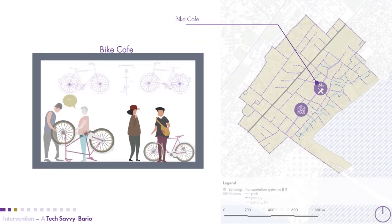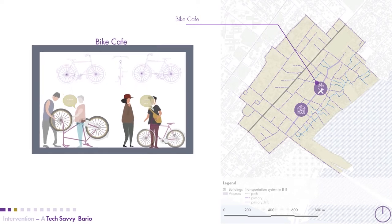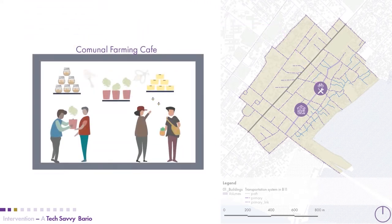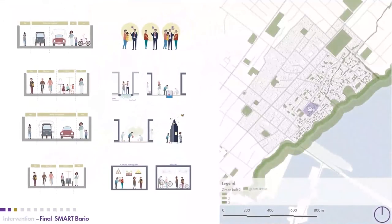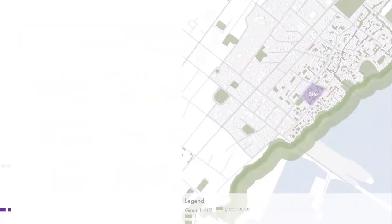Finally, the technology dimension — making the barrier tech-savvy. Tech-savviness was approached as providing the community with ways to improve the technology they already use. The most popular was the bicycle, so we introduced the bike cafe and the communal farming cafe. These two ideas are meant to be places for sharing ideas and sales, helping people improve their knowledge and skills in these activities. All these small projects together make the barrier a smart one.